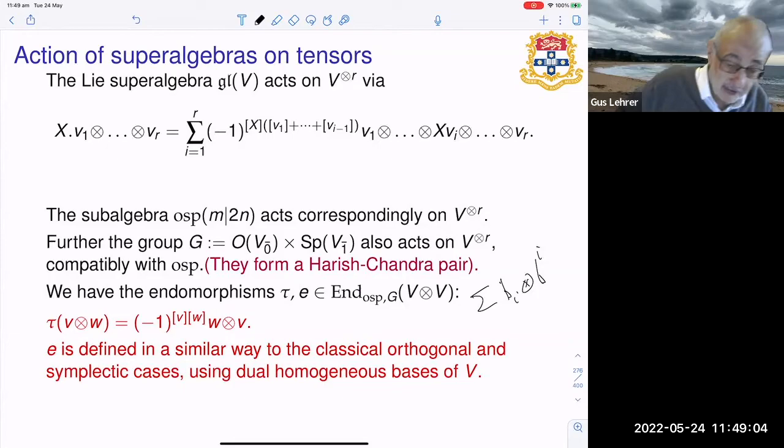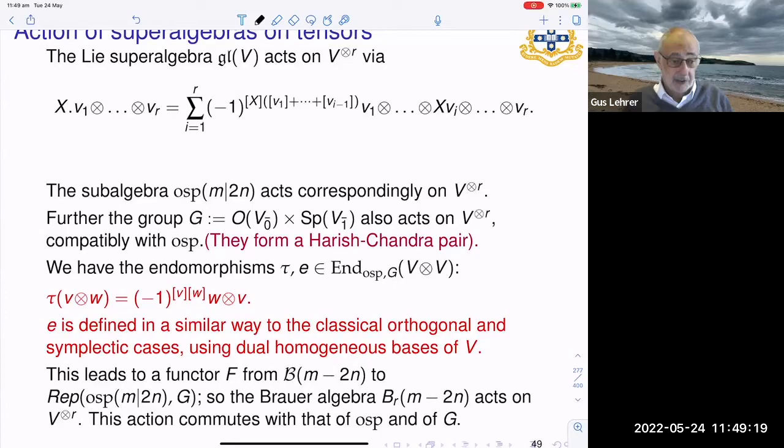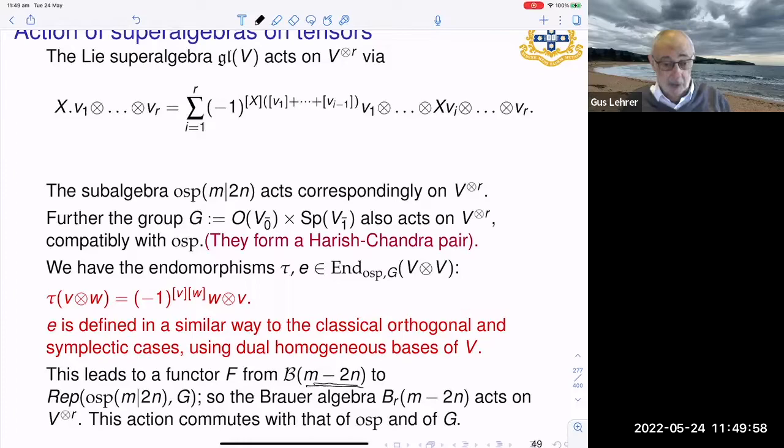As in the classical cases you get a functor from the Brauer algebra, but this time with parameter m minus 2n, which is essentially the dimension of a super space, to the category of representations of osp. So the Brauer algebra acts on the tensor power, the r-th tensor power, and that action commutes with that of osp and of G. G you'll remember is just this, half of the Harish-Chandra pair.